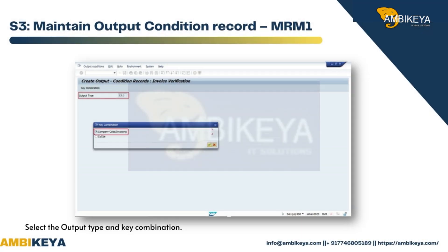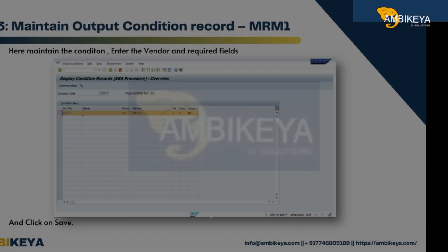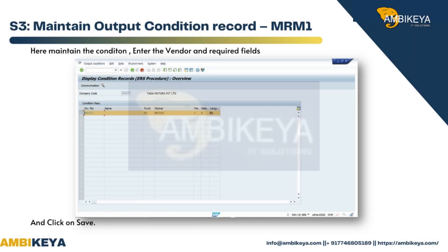S3 — Maintain Output Condition Record, transaction MRM1. Select the Output Type and Key Combination. Maintain the condition record, enter the vendor and required fields, and click on Save.